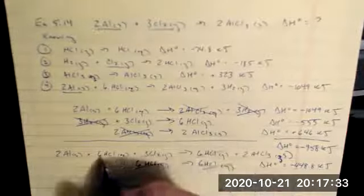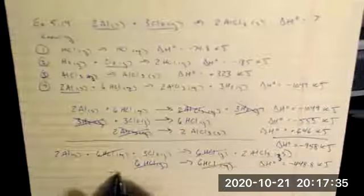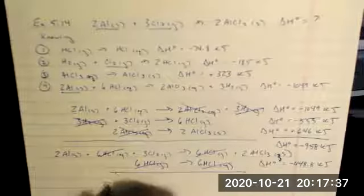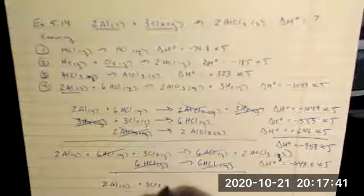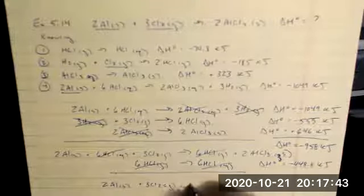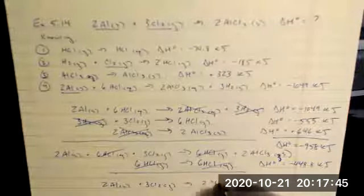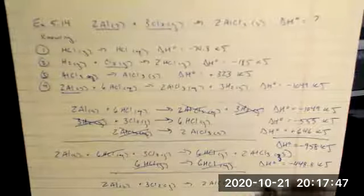So now six HCl gas on both sides, aqueous. Now I have my overall equation exactly as it was provided to me. And I have a final answer.